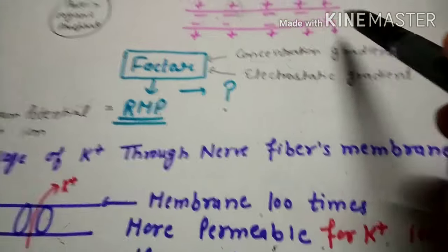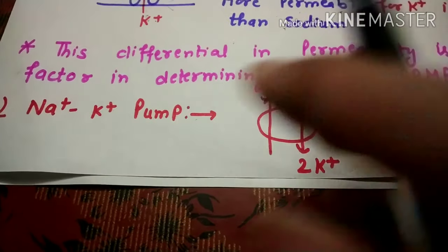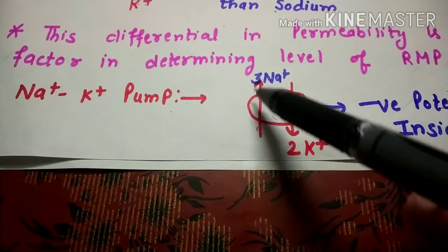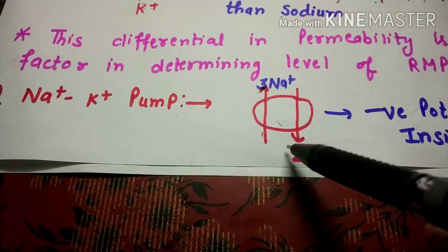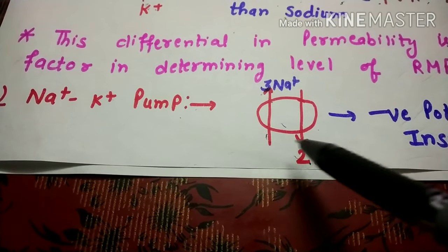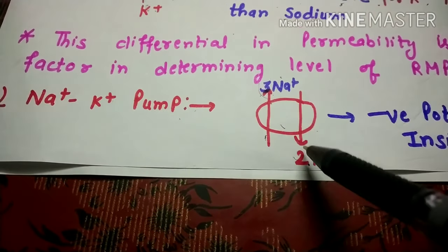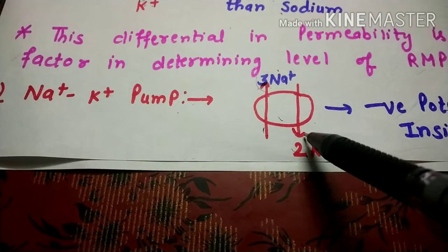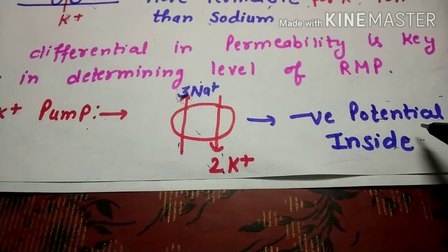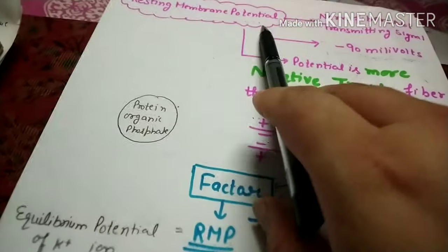The second factor for maintaining the concentration gradient and negative charge inside is the sodium-potassium ATPase pump. In this pump, three sodium ions move out and two potassium ions move in. Since three sodium ions are going out versus two potassium ions coming in, there is one extra positive charge leaving the cell. This reduces the positive charge inside and generates a negative potential, which is the resting membrane potential.